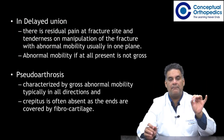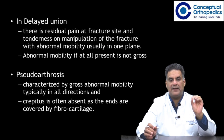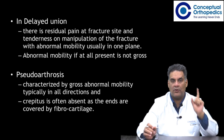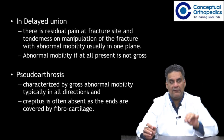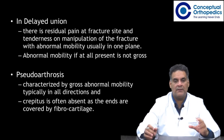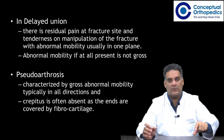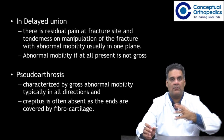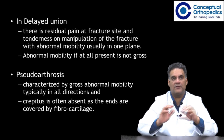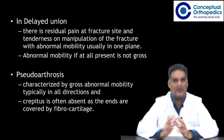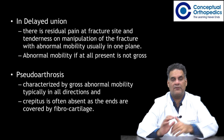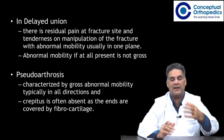In delayed union there is some pain and tenderness on manipulation of the fracture, and abnormal mobility is usually in one plane only; in nonunion you will have mobility in two planes, and it will be gross. In pseudoarthrosis you have gross abnormal mobility in all directions and there is no crepitus because it is covered with fibrocartilage. For details of pseudoarthrosis, congenital pseudoarthrosis of tibia is a good reference.